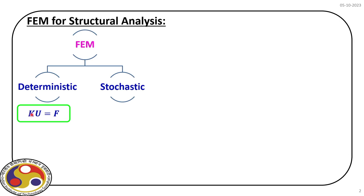Our aim in this lecture is to introduce stochastic FEM — why we need it and what the basic steps are. We start with the elemental stiffness matrix, assemble following some sequence to construct the global stiffness matrix. Once we have a set of algebraic equations, we can take K inverse multiplied by F to get the solution for U. For large dimensions of K, matrix inversion is not convenient, so we follow certain rules to solve this set of linear equations to get the response of the structure.